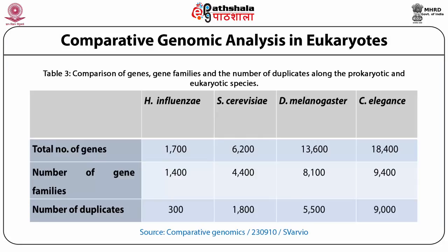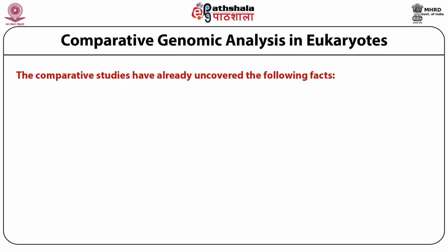A comparison of genes, gene families, and number of duplicates across prokaryotic and eukaryotic species — Haemophilus influenzae, yeast, Drosophila melanogaster, and C. elegans — shows a sequential increase in total number of genes as genome complexity increases. There is also an increase in the number of gene families from 1400 to 9400, and the number of gene duplicates has significantly increased from 300 in Haemophilus influenzae to 9000 in C. elegans.